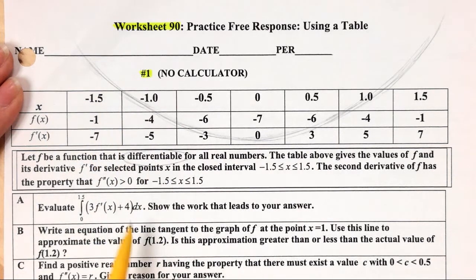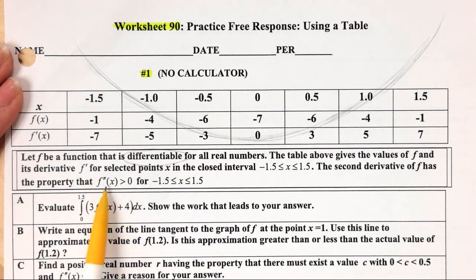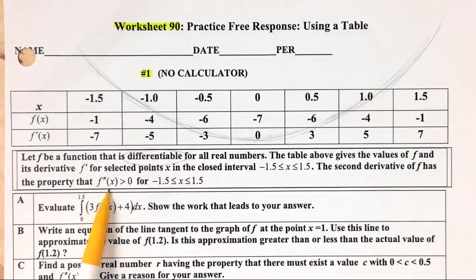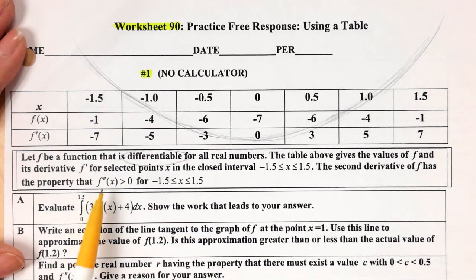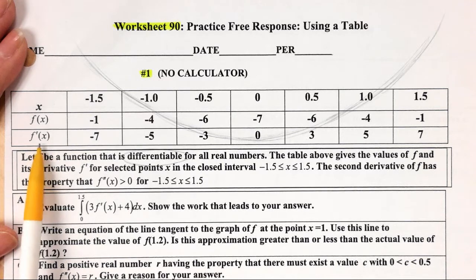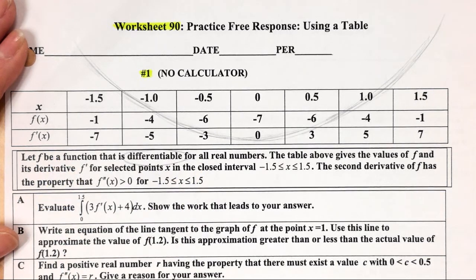The reason I drew it this way is because f double prime of x — which is the concavity of f — is positive. So if f double prime is always positive, everything is concave up. It also means that f double prime exists for all values between negative 1.5 and 1.5. Now if the second derivative exists, that means the first derivative must be differentiable, because this is the derivative of that. So f of x and f prime of x are both differentiable and continuous.